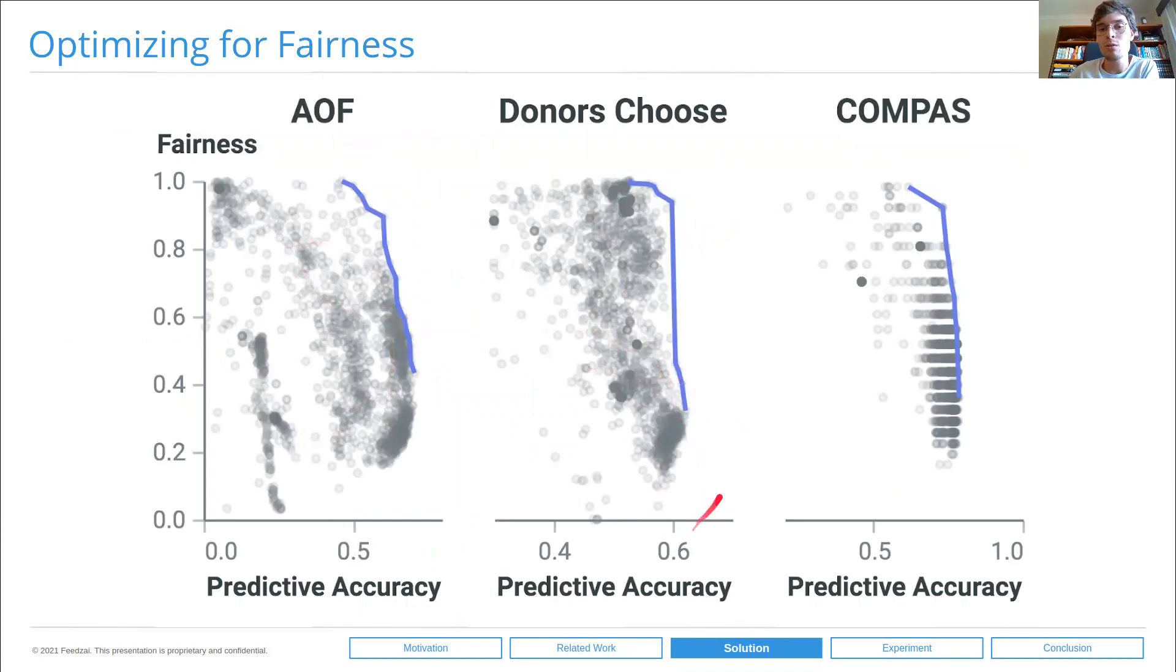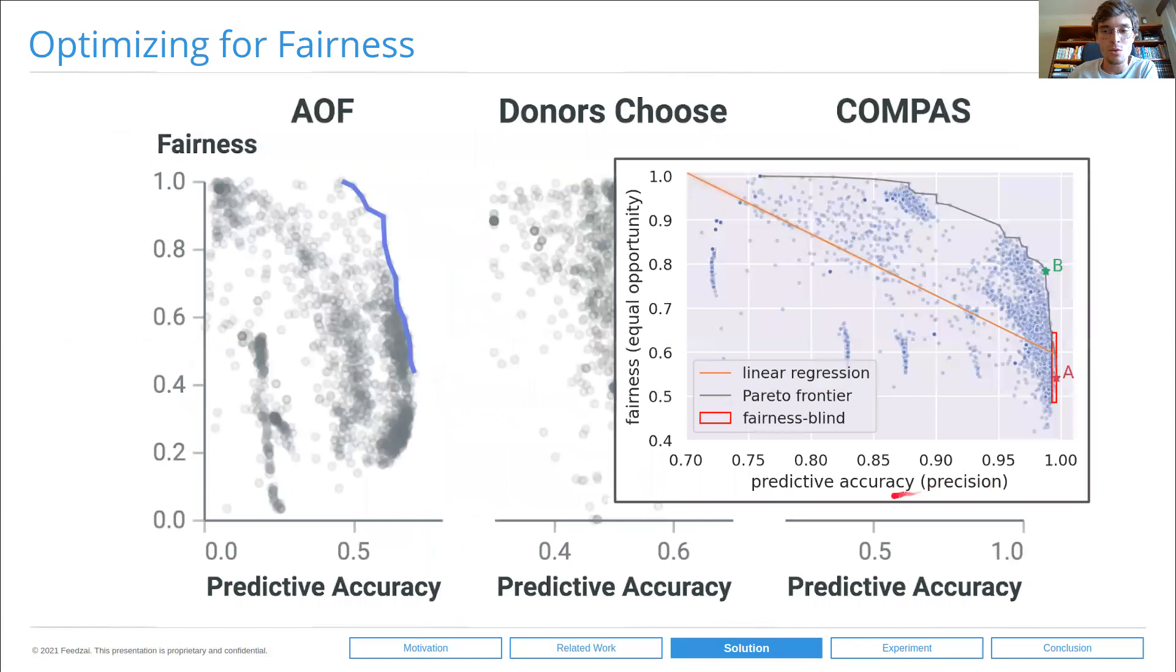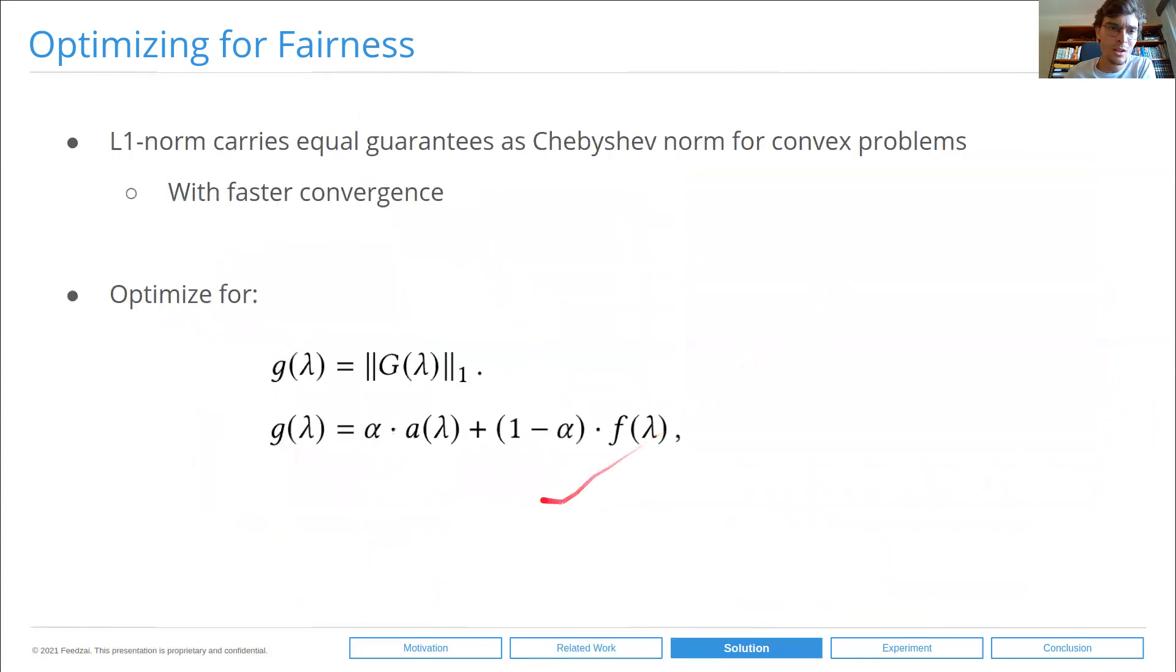These are three plots of the fairness-accuracy trade-off on three real-world datasets that we'll see further ahead. One key insight that we can draw from here is that actually, the fairness-accuracy trade-off is often convex. This is useful to us because running multi-objective optimization on a convex Pareto frontier is much easier. This is prominently the case of the first dataset that we saw as well. The adult dataset obviously has a convex Pareto frontier.